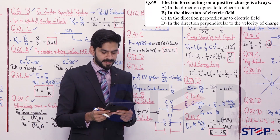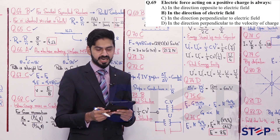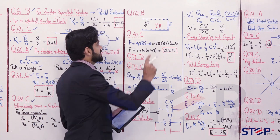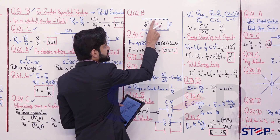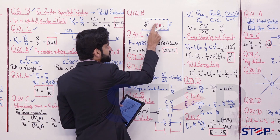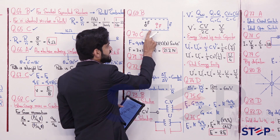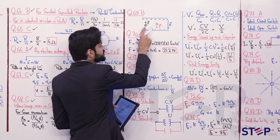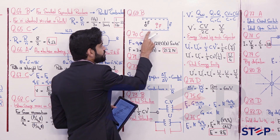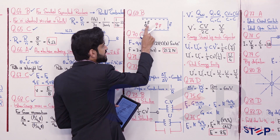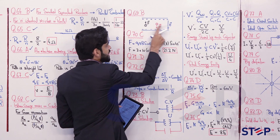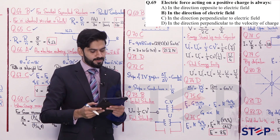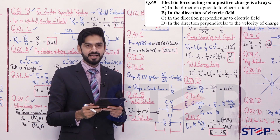Question 69: The electric force acting on a positive charge is always in the direction of the electric field. For a positive charge: the positive plate repels it and the negative plate attracts it — force is in the direction of E. For a negative charge, the force is opposite to E. Since the question asks about positive charge, the answer is option B — in the direction of electric field.